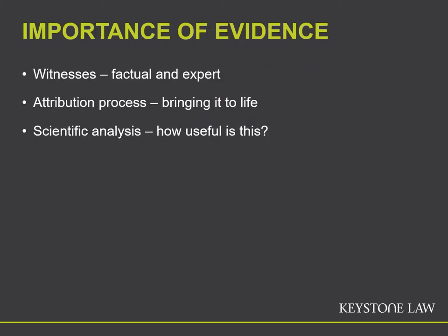Let's get back to the question at hand: how are attribution disputes treated at court? Evidence is extremely important. There are three primary types of evidence: the witnesses — both factual and expert — then how you bring the attribution process to life in a courtroom situation, and finally scientific analysis and how useful it is at trial. The factual witnesses are those who were there at the time and participated in the attribution process. The expert witnesses are independent witnesses who give their opinion on the auction house process or on art historical scholarship.